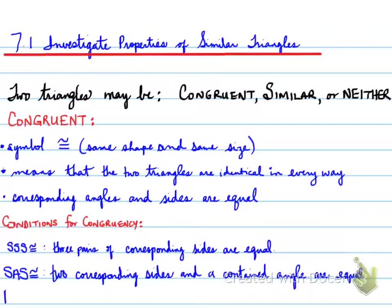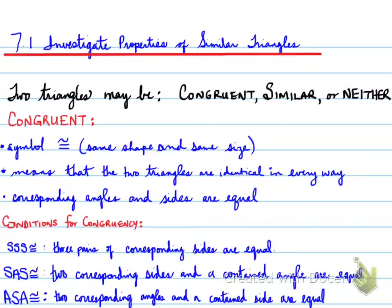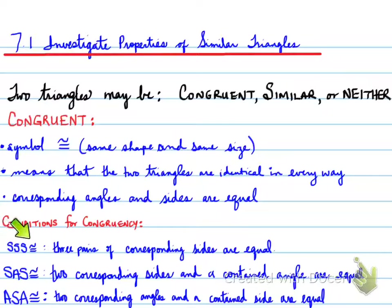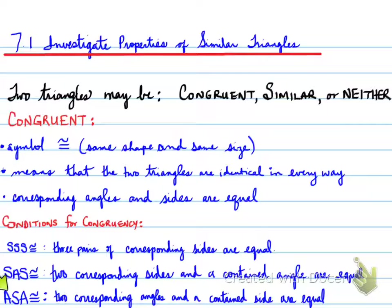And finally, ASA — angle-side-angle congruency — which means two corresponding angles and a contained side are equal. We're going to look at these three types and prove them on the next page. Side-side-side congruency means three pairs of sides are equal. Side-angle-side means you have two sides and the angle that is made up by those two sides — the contained angle, that is the angle between the two sides — are equal. Angle-side-angle means you have two angles and the corresponding side held up by those two angles are also equal.